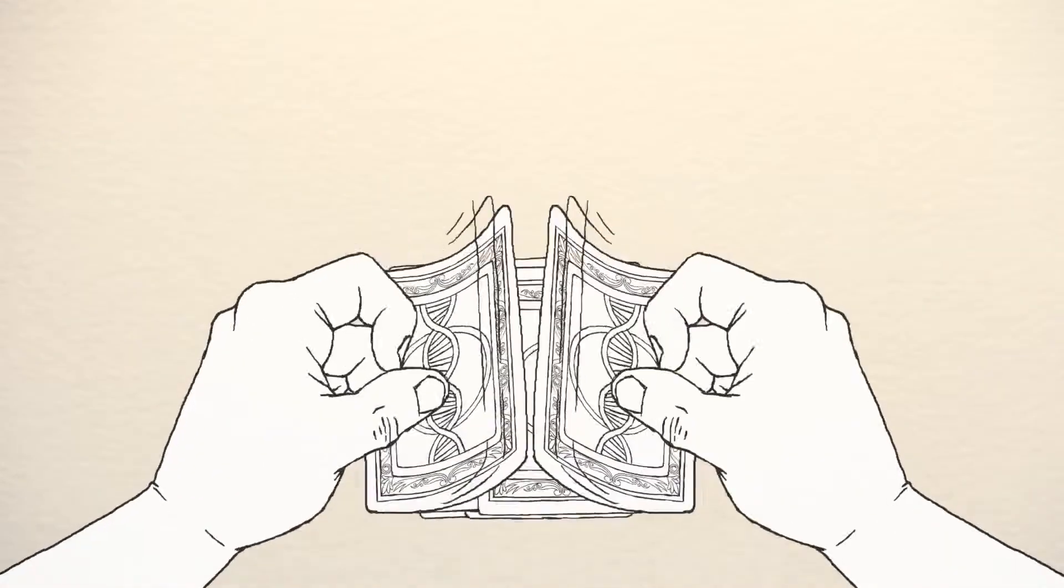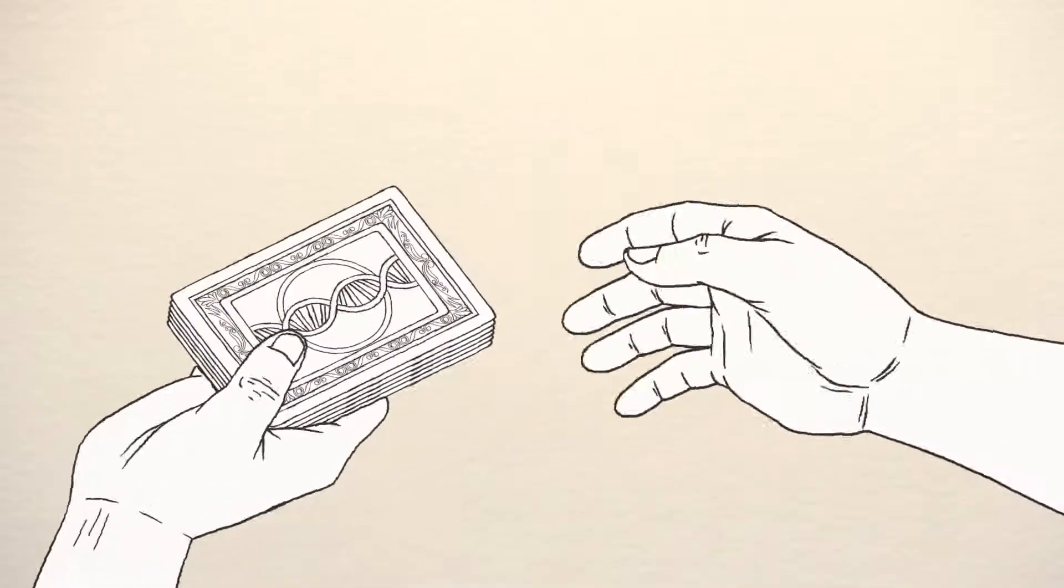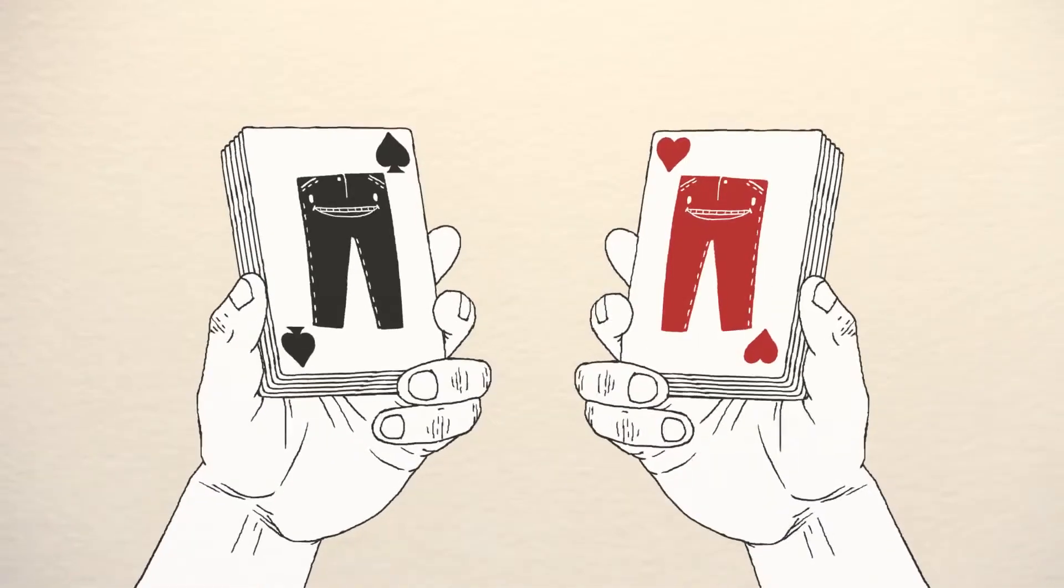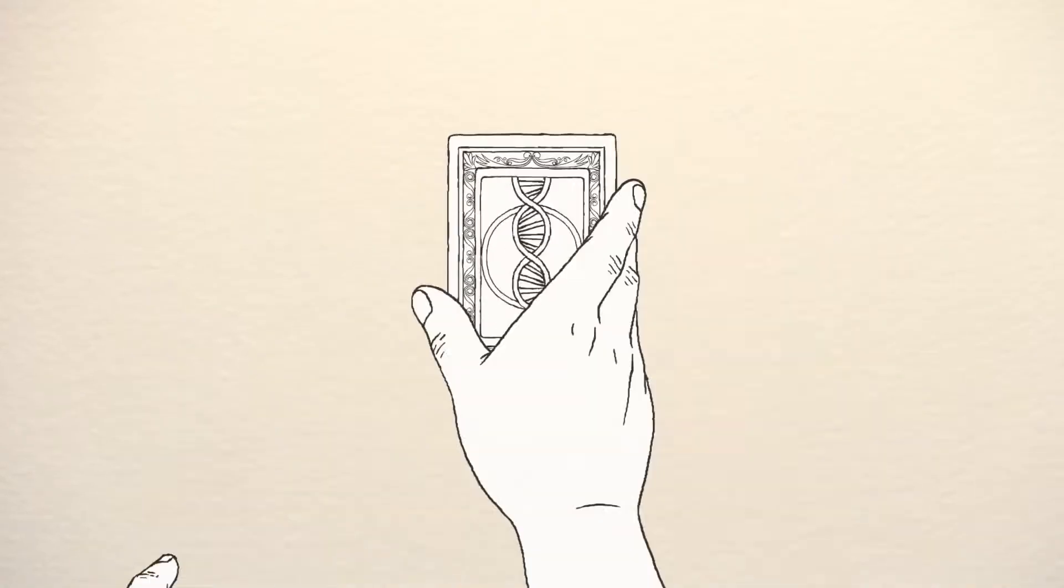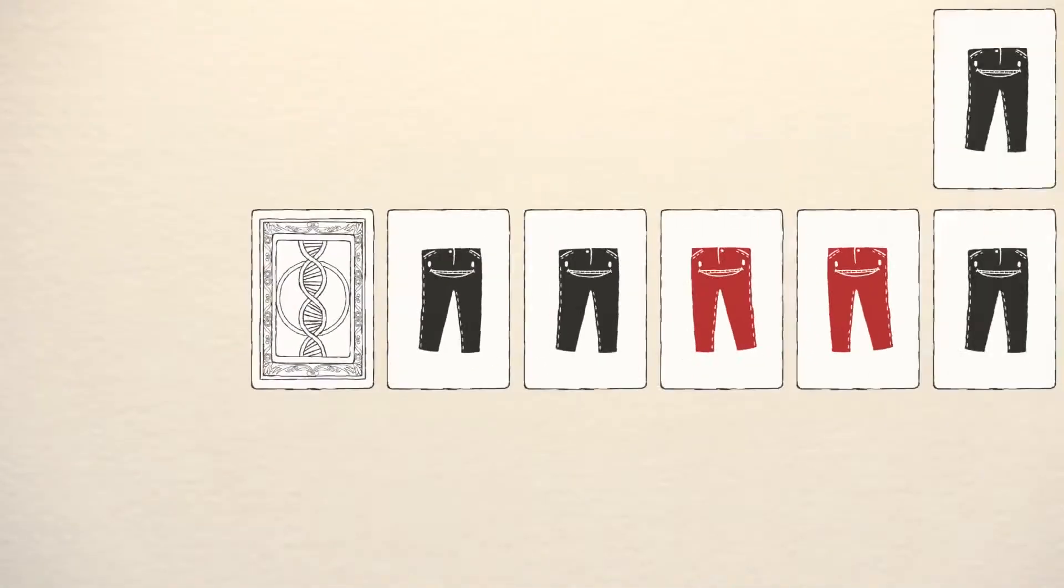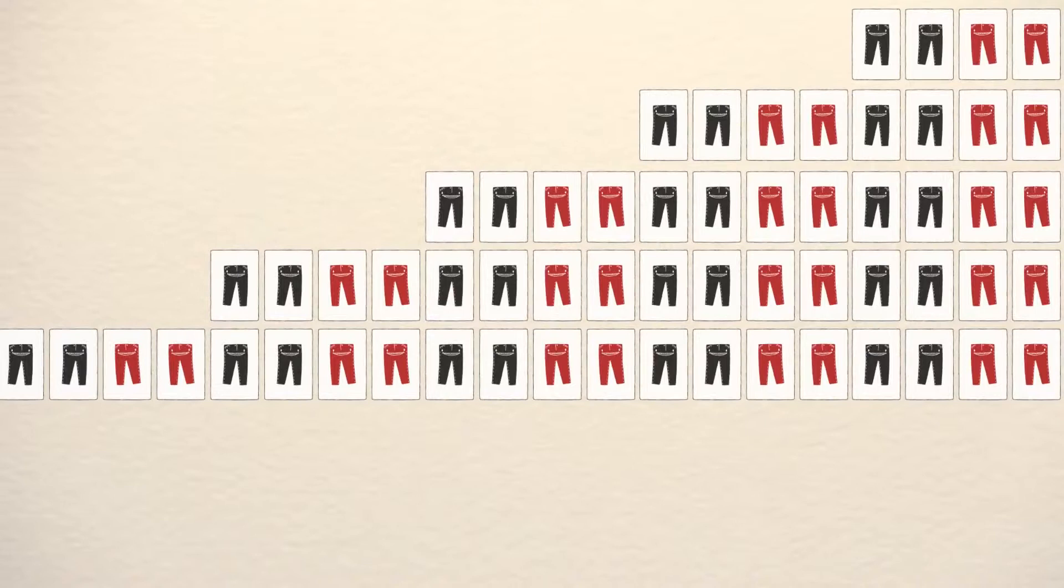The genes are reshuffled and passed to the next generation. The gene pool remains the same, 50% red. Even though the population may grow in size over time, the frequency should stay at about 50%. If this frequency ever varies, then evolution has occurred.